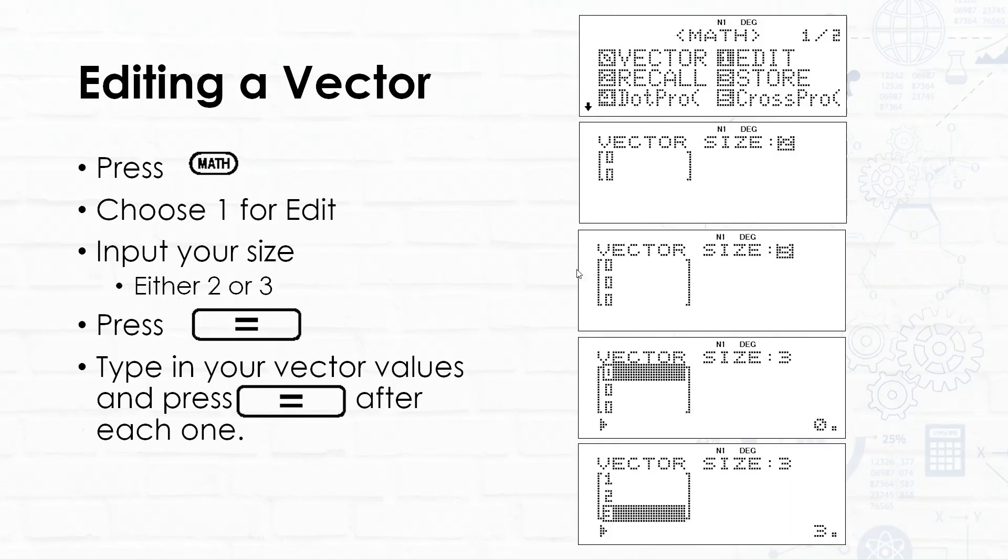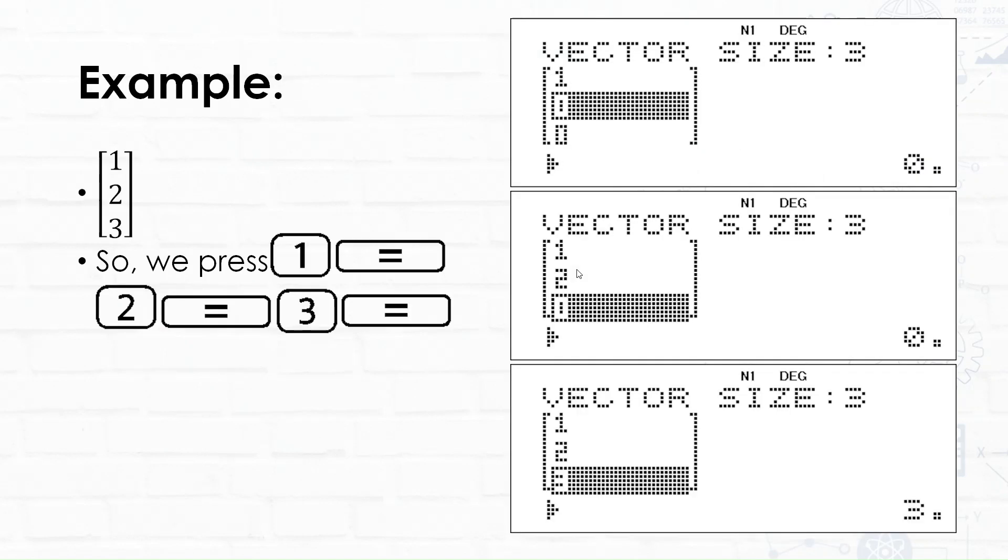Let's edit a vector now. Press math, choose 1 for edit, and then input the size of a vector. We're only allowed two sizes: either a two-part vector or a three-part vector, then press equals. Type in your vector values and press equals after each one. Here's an example.